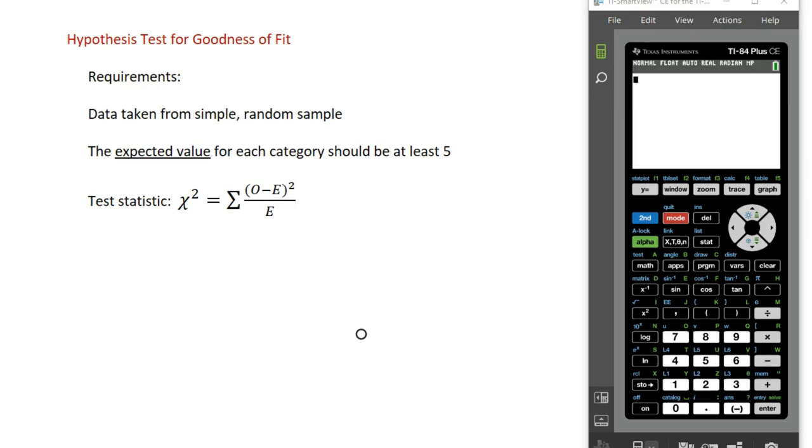If we are going to conduct a hypothesis test for goodness of fit, we have the following requirements. The sample we use should be taken from a simple random sample, and the expected value for each category should be at least 5.